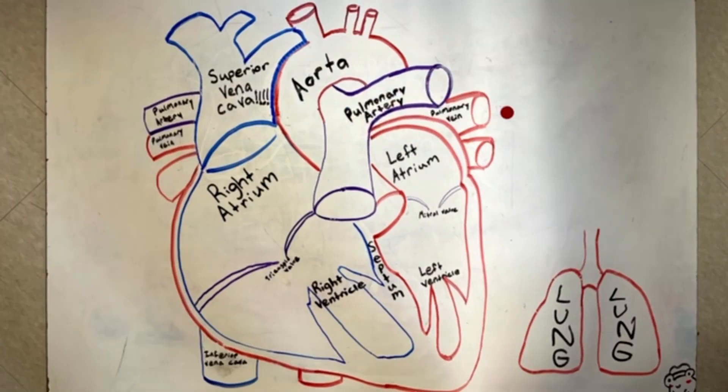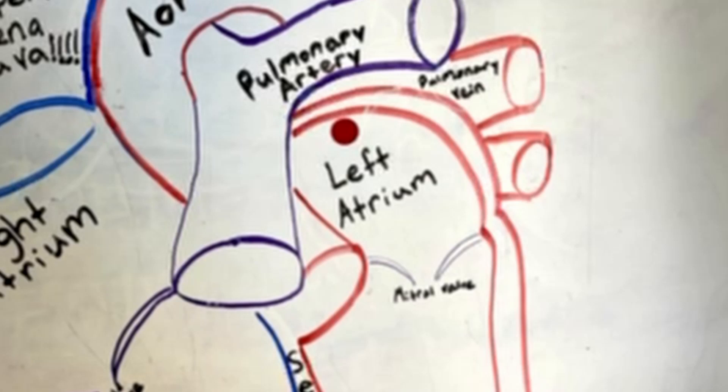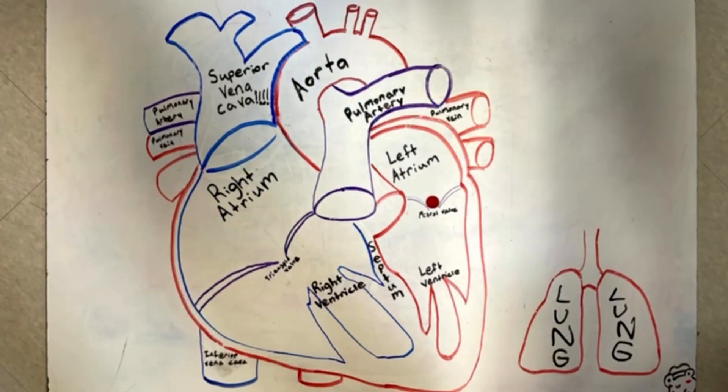And back to the left atrium we go. And now we're back from A51 with the blood cells, you know, that have that oxygen in them. So they push through that mitral valve like it's nothing. And they don't look back.